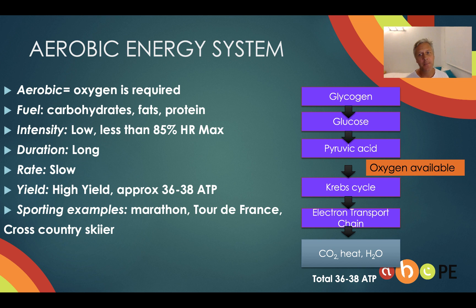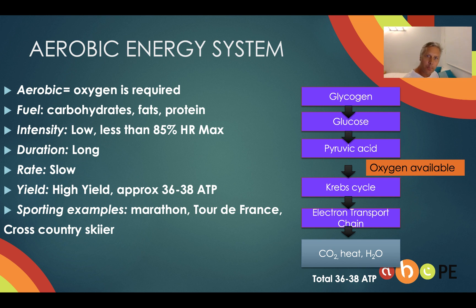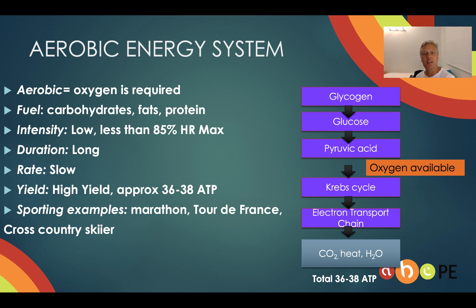Looking at the formula, when oxygen is available, the first three steps — glycogen, glucose, pyruvic acid — are the same as the anaerobic glycolysis system. But when oxygen is available, that unlocks a key for the chemical process to go into the mitochondria. We then go through two further processes called Krebs and the electron transport chain, which you don't need to know in detail. What we do need to know is that oxygen unlocks the key for those cycles to take place, and then we get a whole heap more ATP — 36 to 38.